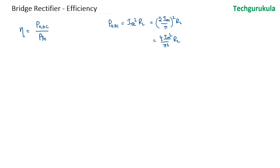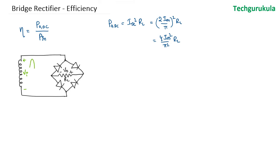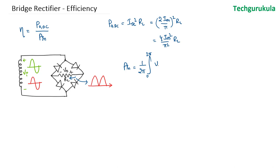Now we need to find the input power. For that, let me take the bridge rectifier circuit from the secondary winding forward. The input voltage was a sinusoidal waveform, and the current supplied by the secondary winding is also sinusoidal, whereas the current through the load resistor is a rectified full wave at the output. The input power is 1 over 2pi, integrated from 0 to 2pi of the input voltage Vi times the input current — that is Vm sin(alpha) times Im sin(alpha) d(alpha).